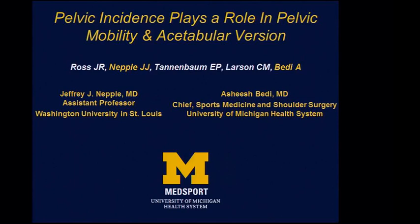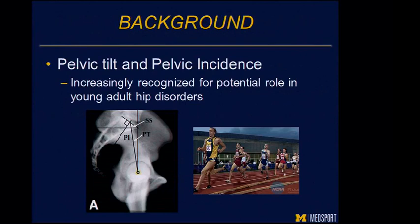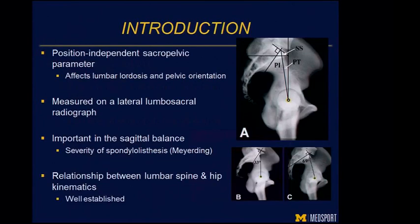Pelvic incidence plays a role in pelvic mobility and acetabular version. Pelvic tilt and pelvic incidence are increasingly recognized as having a potential role in young adult hip disorders. Pelvic incidence is a static measurement, a parameter of sagittal orientation of the pelvis and spinal balance. It's a natural component of each of our postures, with significant variation between patients, independent of position. It affects our lumbar lordosis and pelvic orientation, measurable on a standard lateral lumbosacral radiograph. In the spine literature, there are clear associations with spondylolisthesis, as well as the relationship between the lumbar spine and the hip.